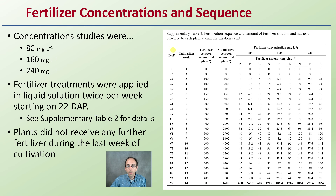You can see the days, the cultivation week, the fertilizer solution, the accumulative solution amounts, and the concentrations at 80, 160, and 240 — all broken down in the table.